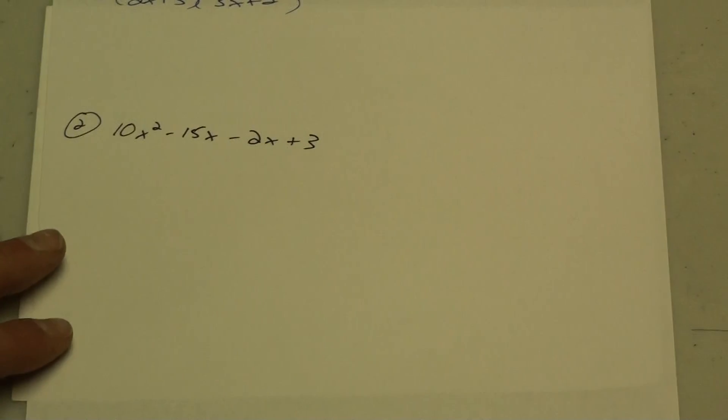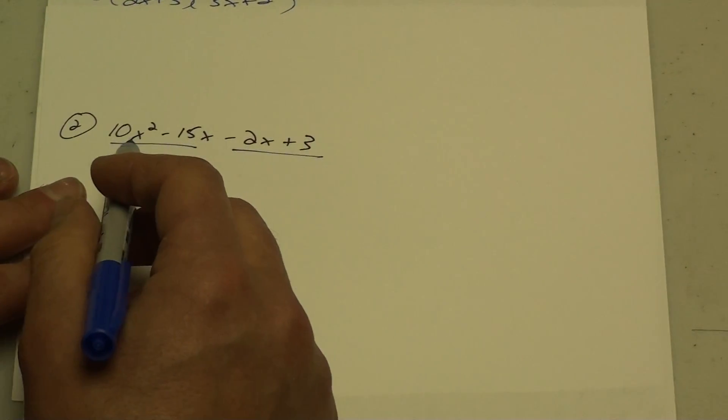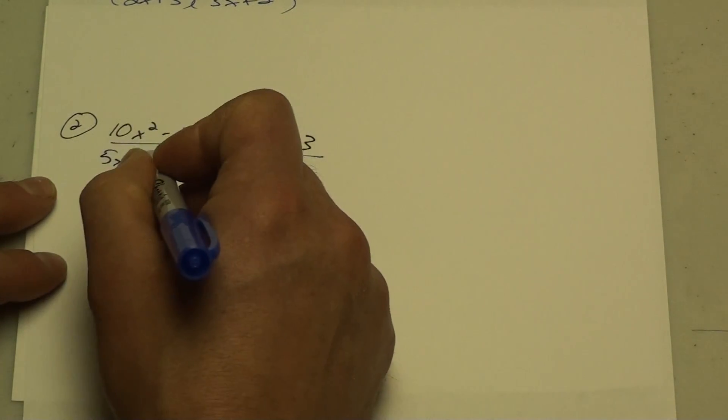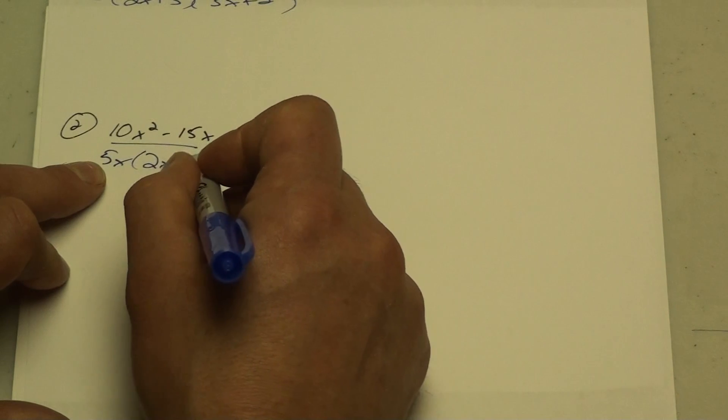The second example, again, split in half. First half, what can I take out? I can take out a 5 and an x, and then I'm left with 2x, and this time it'll be 2x minus 3.